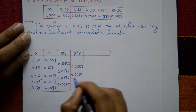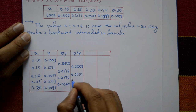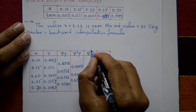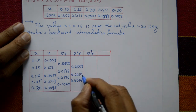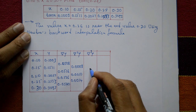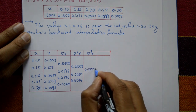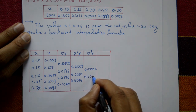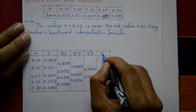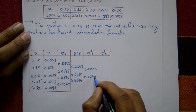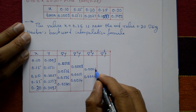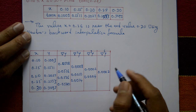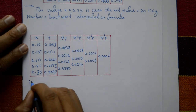The third backward differences: 0.0010 − 0.0008 = 0.0002, and the next third difference is 0.0004. The fourth backward difference: 0.0004 − 0.0002 = 0.0002. These are the leading backward differences needed for the formula.